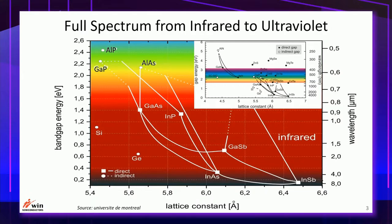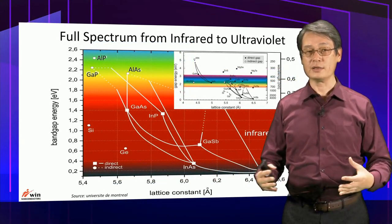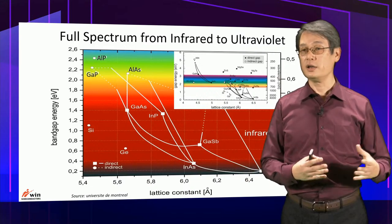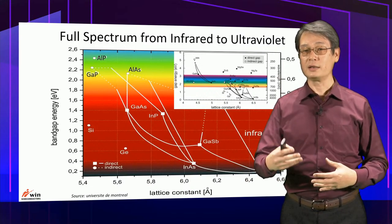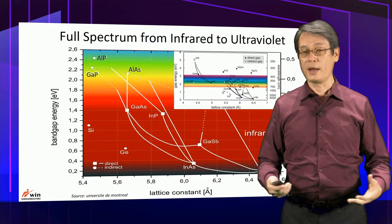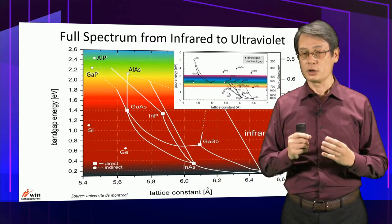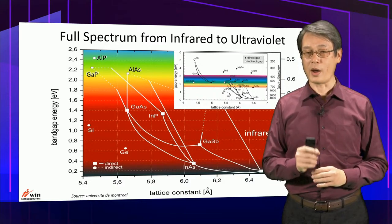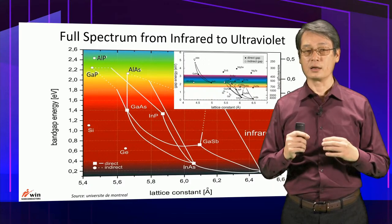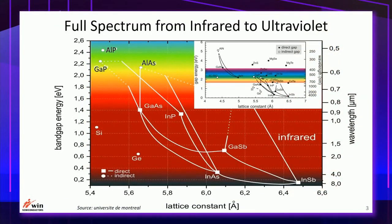Compound semiconductors provide a very wide frequency wavelength spectrum, from infrared and visible light all the way to UV light. Depending on the application you design for, you can carefully choose the right material and the concentration of each element for the wavelengths you need.